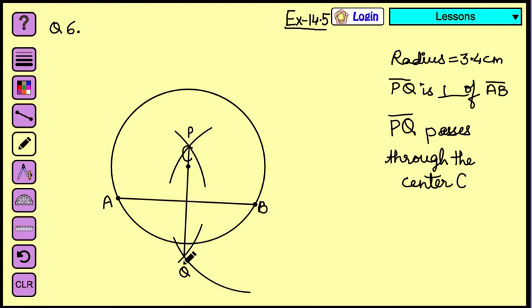Once the perpendicular bisector has been done, the question was asking to check it out whether this perpendicular bisector is passing through the center C or not. So it was yes passing through the center. We can write it down yes it is passing through the center.